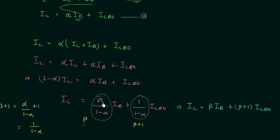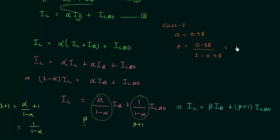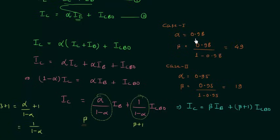Now we will see how beta changes with a change in alpha. In case 1, alpha is equal to 0.98, so beta equals 0.98 divided by (1 minus 0.98), giving beta equal to 49. In case 2, alpha is equal to 0.95, so beta equals 0.95 divided by (1 minus 0.95), which equals 19. You can see a slight change in alpha changes beta significantly. Therefore beta is very sensitive to variations in alpha.